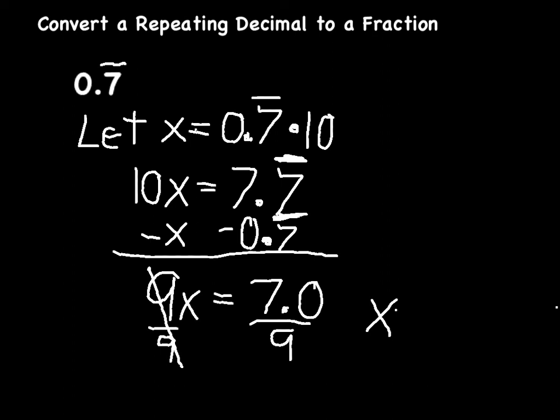Therefore, x equals 7 ninths. We already said that x equals 0.7 repeating, and later we showed that x equals 7 ninths. Therefore, 0.7 repeating has got to be equal to 7 ninths.